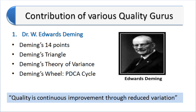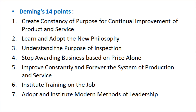The first of the 14 points is: create consistency of purpose for continual improvement of the product and services. That means management must create and publish the aim and purpose of the organization for investors, customers, suppliers, employees, and the community. The organization should develop a long-term view of businesses, set goals accordingly, and allocate resources to research, training, and continual education.